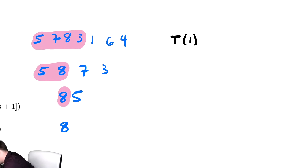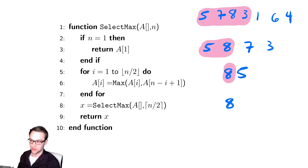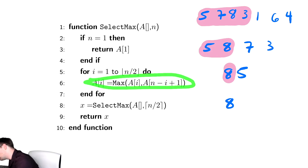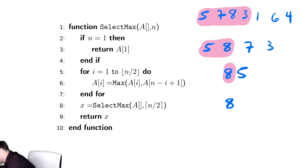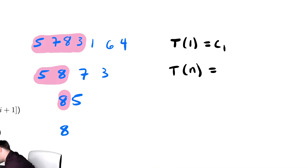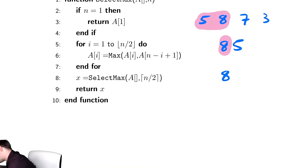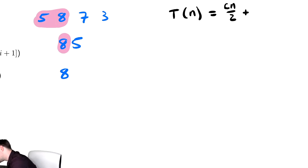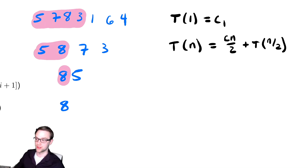So our base case takes constant time. We're going to say T(1) is equal to c₁. And then T(n) for n not equal to 1: if we look at the code, we have a for loop that runs n over 2 times approximately, ignoring the rounding down. Inside it finds the maximum - finding the max is a comparison and then potentially a swap, which takes roughly constant time. So the cost of that loop is going to be cn over 2. Plus afterwards, it recalls the function with size n over 2, so it makes a recursive call of size n over 2. And here we're going to ignore the floor function.